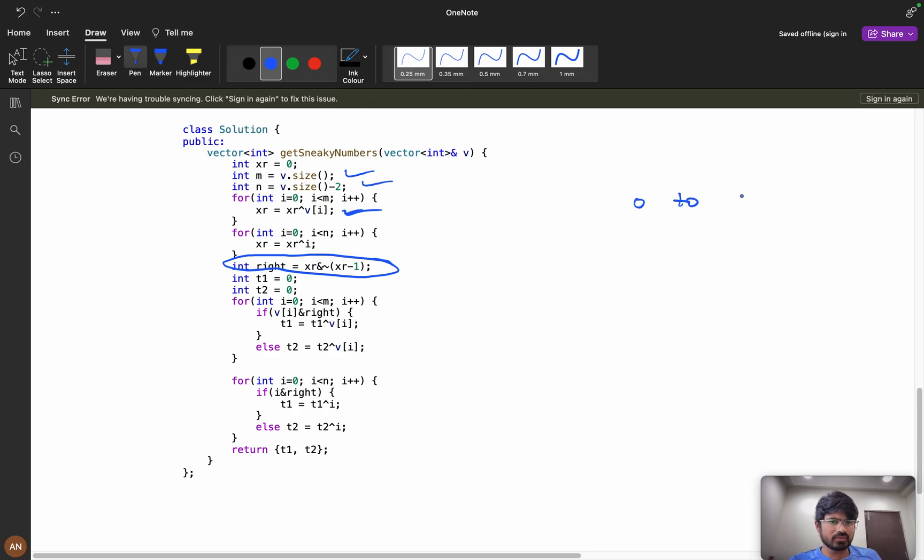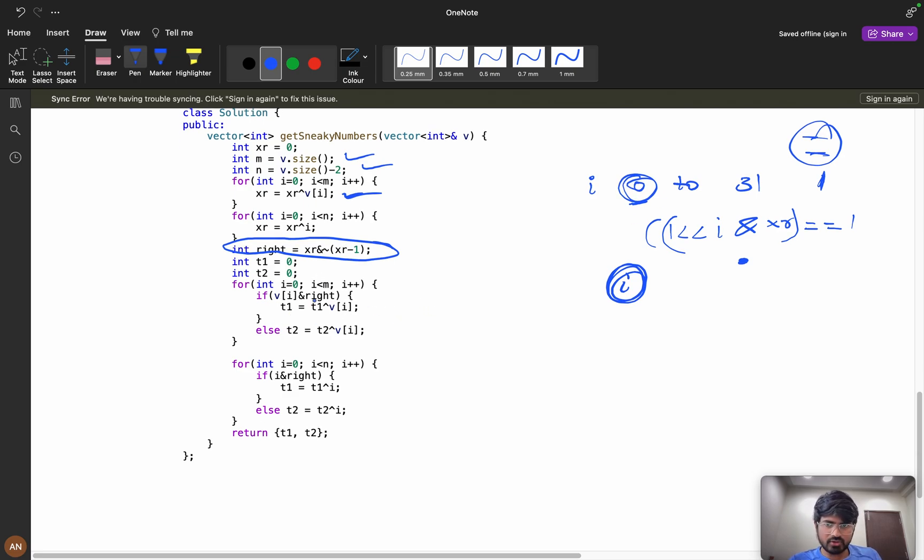To find the right index, this is the operation you can do, or else what you can do is start iterating from 0 to 31, and you can do one left shift of i, and AND this value XOR. If it is 1, you can say that at this point my both parity bits are different, so I can start segregating from here. Your index will be i, so for that index you can perform the v of i AND right operation.